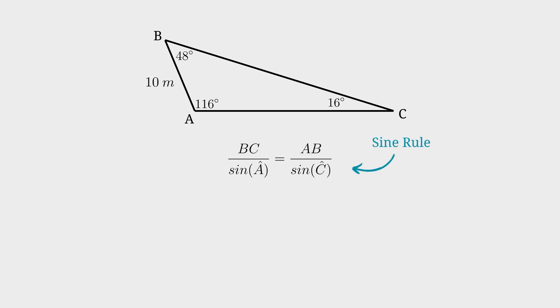For a more in-depth explanation on the sine and the cosine rule, visit my channel. Substitute your values into your equation, then isolate side BC, multiply both sides by sine of 116 degrees.